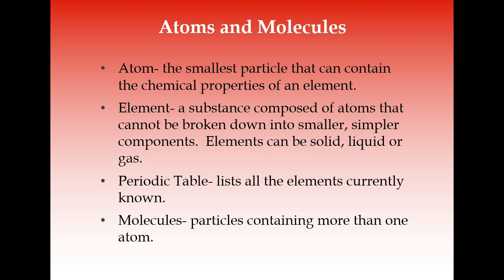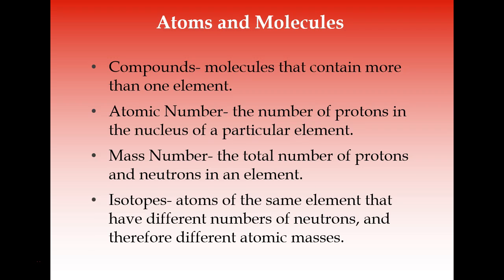Atoms are the smallest part of matter. Different elements all have their own different atoms and those atoms can combine to form larger compounds. Those larger compounds can be made up of the same element or more than one element. We need to look at atomic number, mass number, and isotopes when we get to nuclear energy as a renewable form of energy.